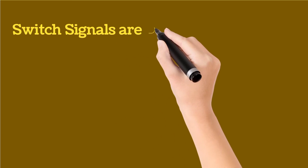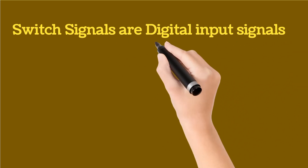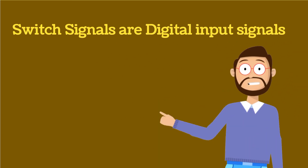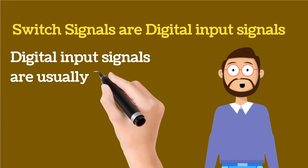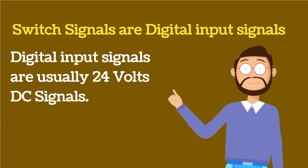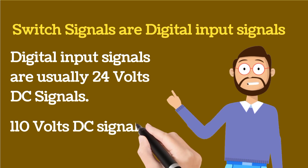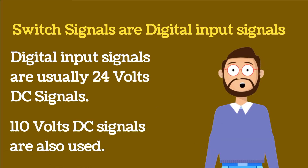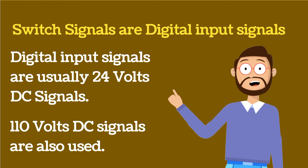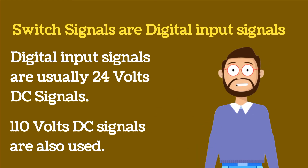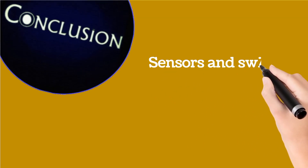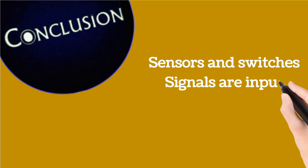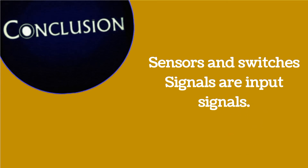Switch signals are Digital Input (DI) signals. DI is the short form for digital input. DI signals are usually 24 V DC, although 110 V DC signals are also used. The conclusion is that sensors and transmitter signals are input signals — remember this point.